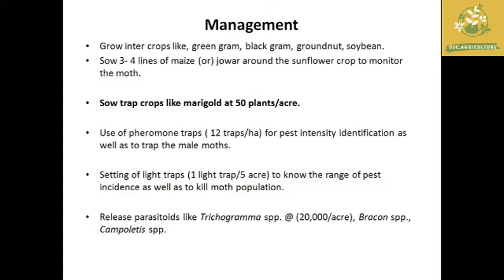For management, use intercropping with green gram or black gram, or groundnut and soybean, so the main sunflower plant is protected by the presence of these intercrops. Sow three to four lines of maize or jowar around the sunflower crop to monitor moth presence, since Helicoverpa armigera is mainly attracted to maize or jowar. We can also plant marigold at 50 plants per acre, as the scent produced by marigold helps prevent entry of moths into the sunflower field.